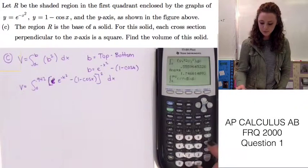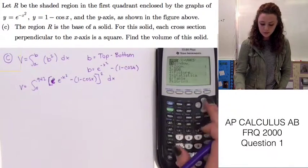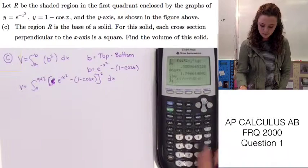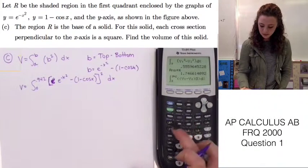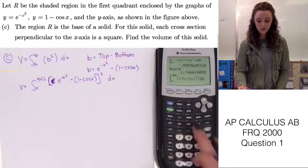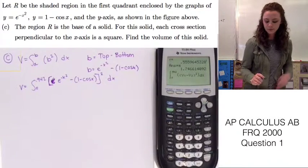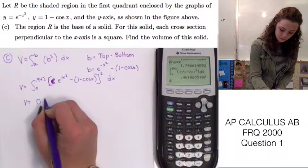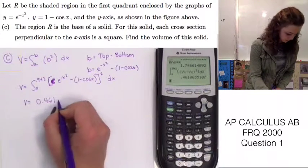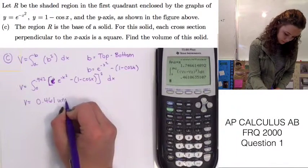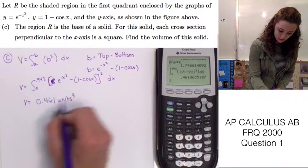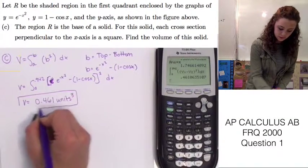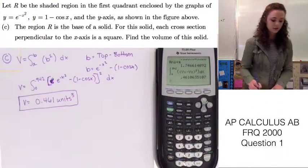Don't forget to put your parentheses in. Otherwise, you won't end up with the right value, which is a pretty simple mistake but it will give you a completely wrong answer. This tells us that the volume is equal to 0.461 units cubed, which is the final answer for part C of this question.